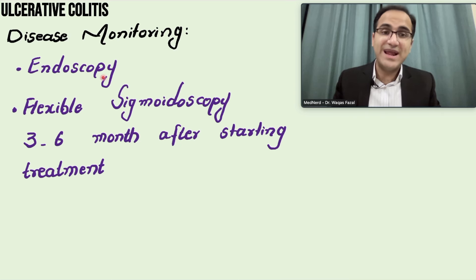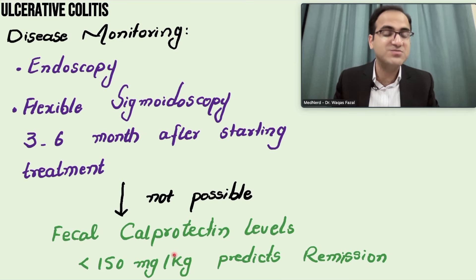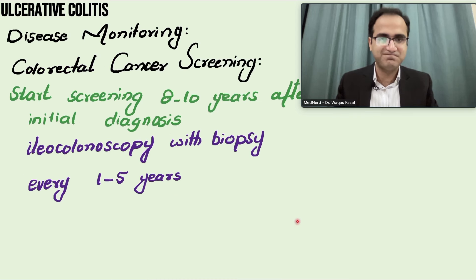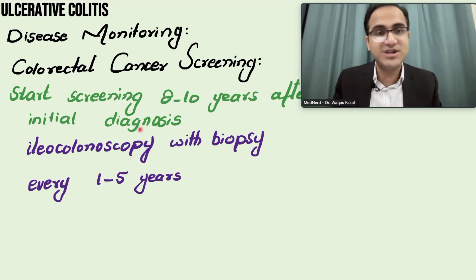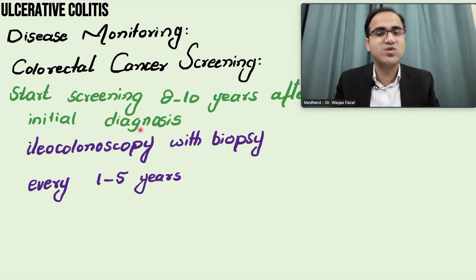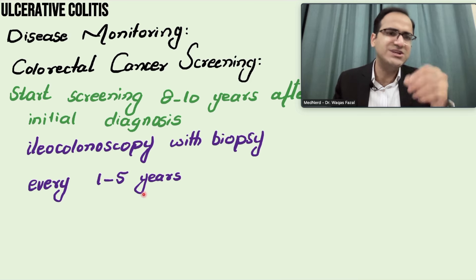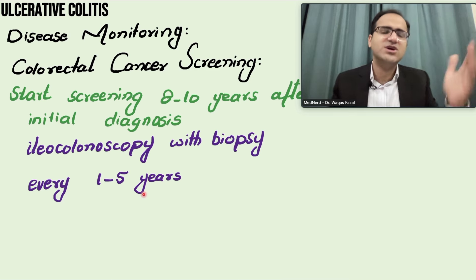Disease monitoring is done by endoscopy. Flexible sigmoidoscopy is performed 3 to 6 months after starting treatment to assess how much inflammation has resolved. If the patient refuses invasive procedures, fecal calprotectin levels less than 150 mg/kg predict remission. Start colorectal cancer screening 8 to 10 years after initial diagnosis, as it takes that long for cancers to develop. Ileocolonoscopy with biopsy is done every 1 to 5 years depending on severity.